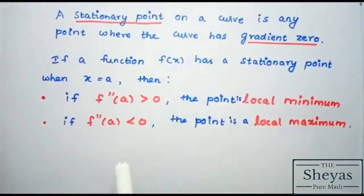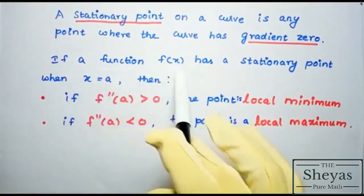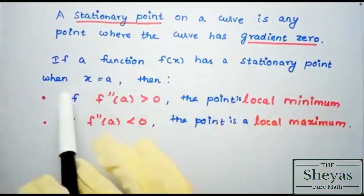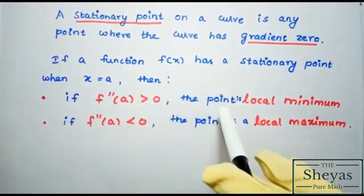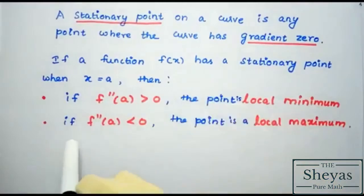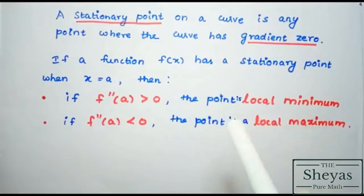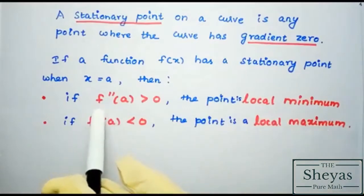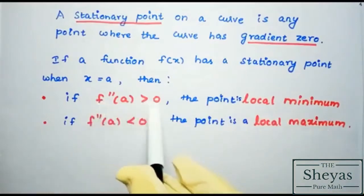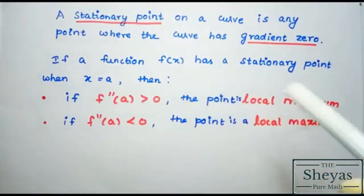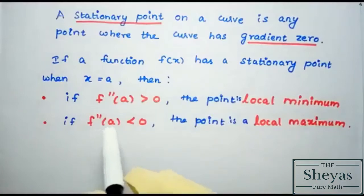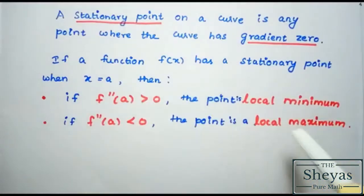For local minimum and local maximum: if a function f(x) has a stationary point when x equals a, then if f double dash of a is greater than 0, the point is a local minimum. If f double dash of a is less than 0, the point is a local maximum.